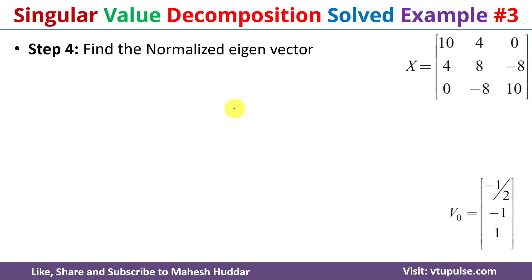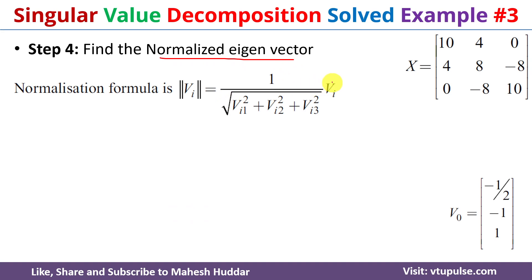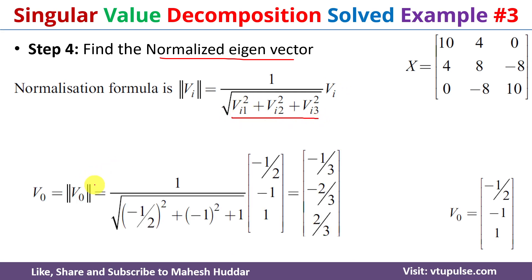Once we find the eigenvectors, the next step is to find the normalized eigenvectors using the formula: eigenvector divided by its length, where length equals the square root of the sum of squares of individual elements. The first normalized eigenvector v0 is [-1/3, -2/3, 2/3].